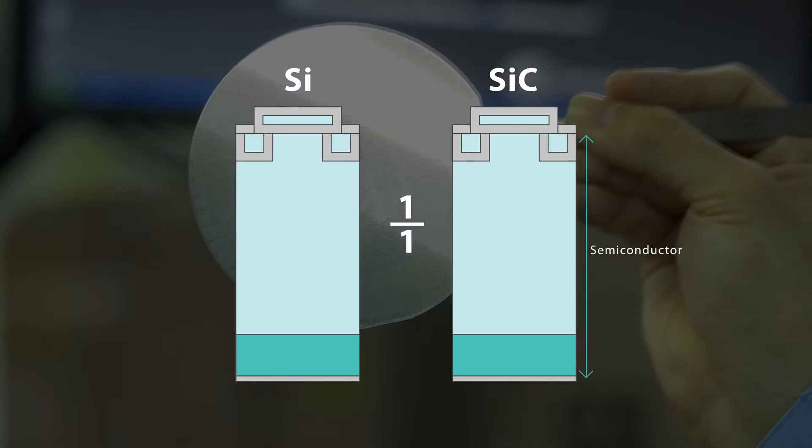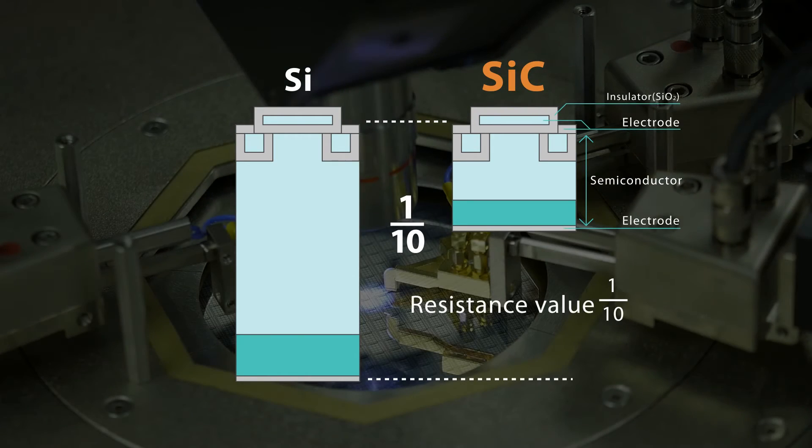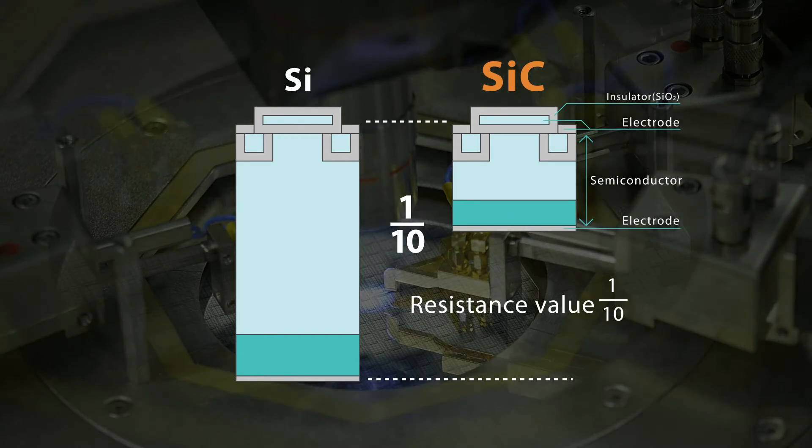SiC, with a higher breakdown voltage and 10 times lower on resistance than silicon, will cut energy loss drastically.